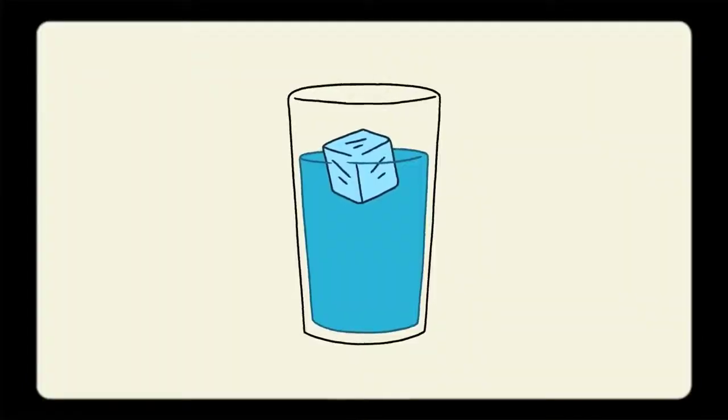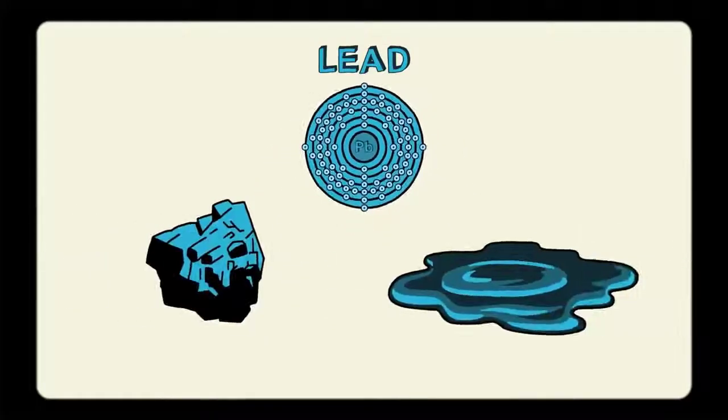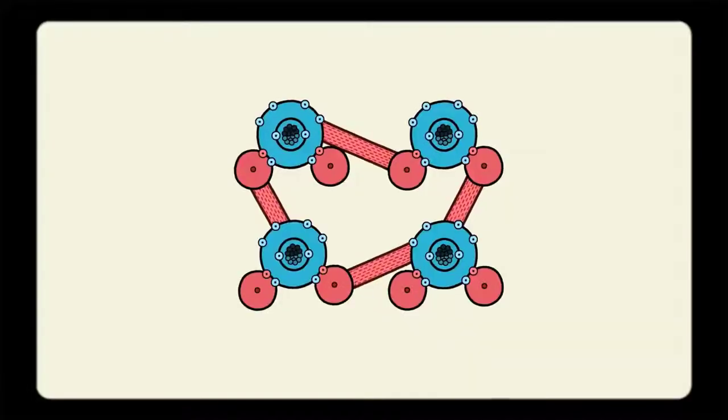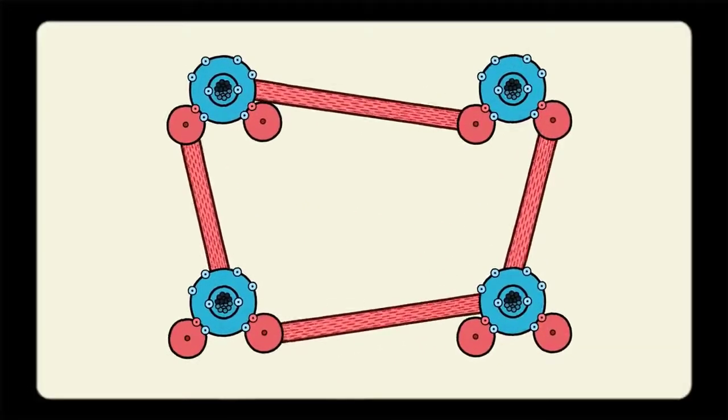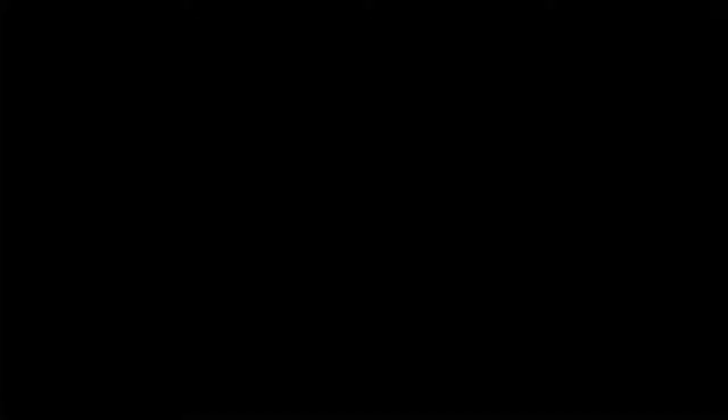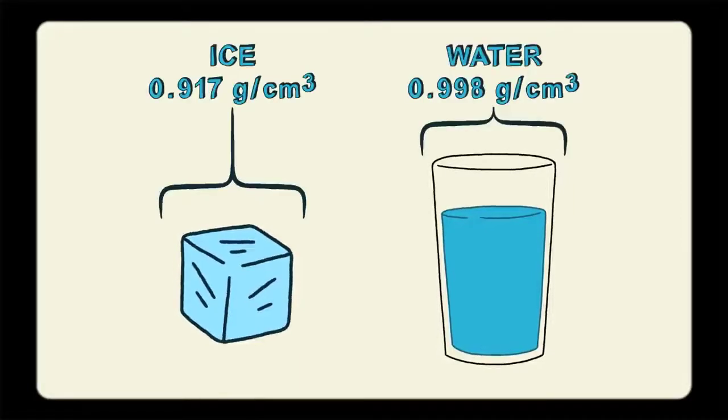Why does ice float on top of liquid water? For most other substances, the solid state is more dense than the liquid state. But that is not the case for water. Hydrogen bonds keep water molecules farther apart in frozen water than in liquid water. The farther apart the molecules are, the less dense that solid is. So, ice is about 9% less dense than water, which means it floats on the top.